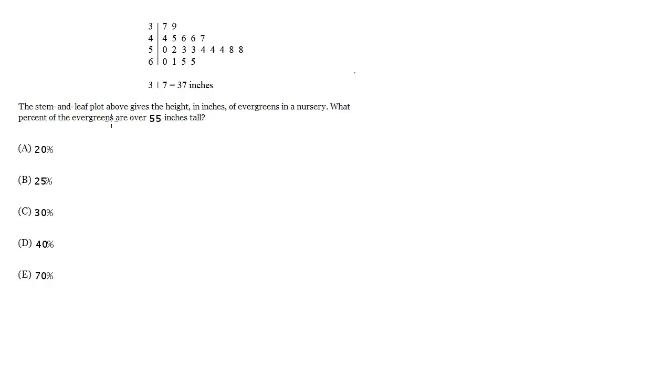So we need to know how many of our trees, what percent, are over 55 inches tall. So here is our 5. And which ones are over 55? Well, it's going to be this one and this one, they're both 58. And then all of these: 60, 61, 65, 65, so that's 1, 2, 3, 4, 5, 6.